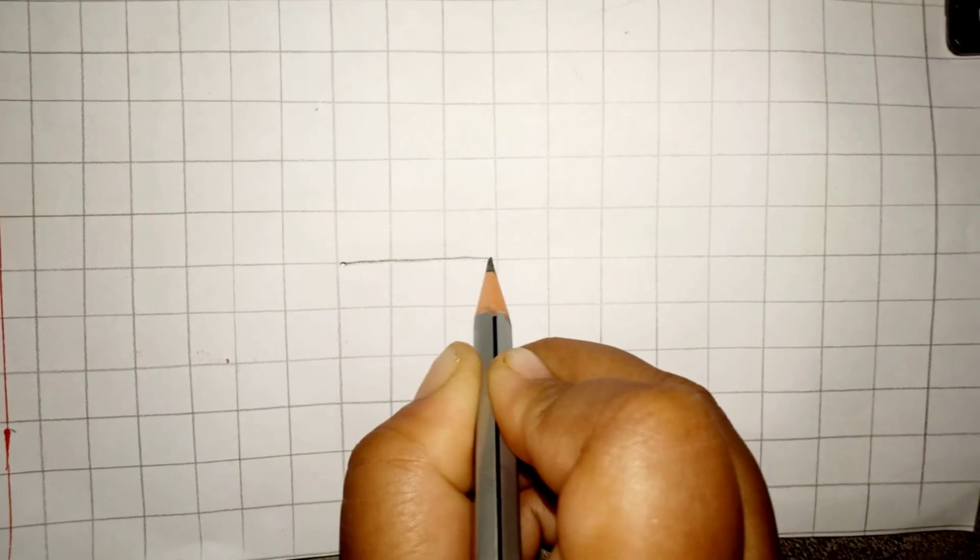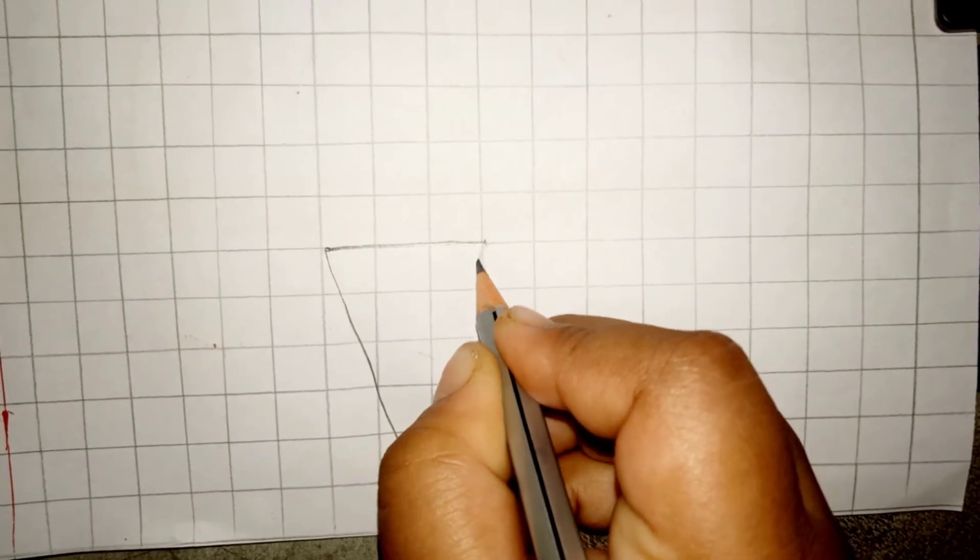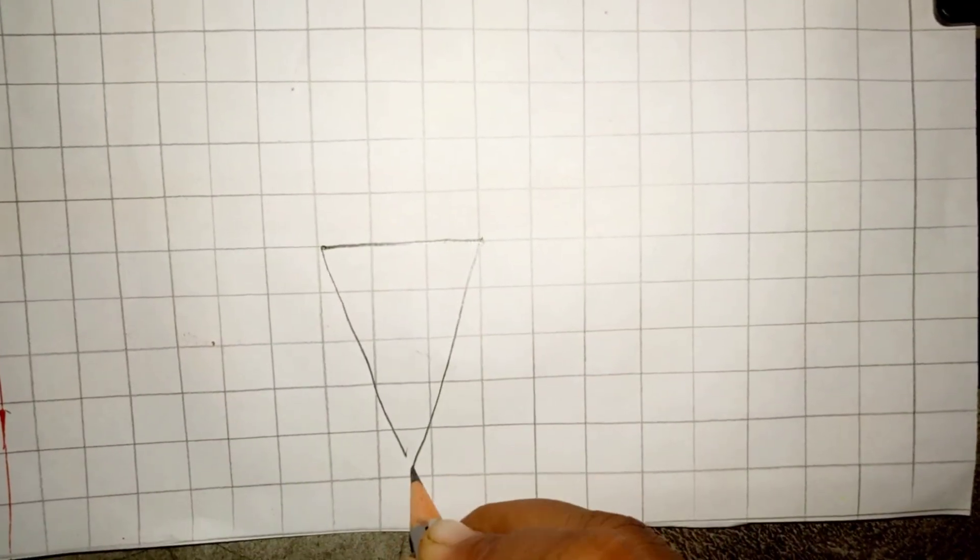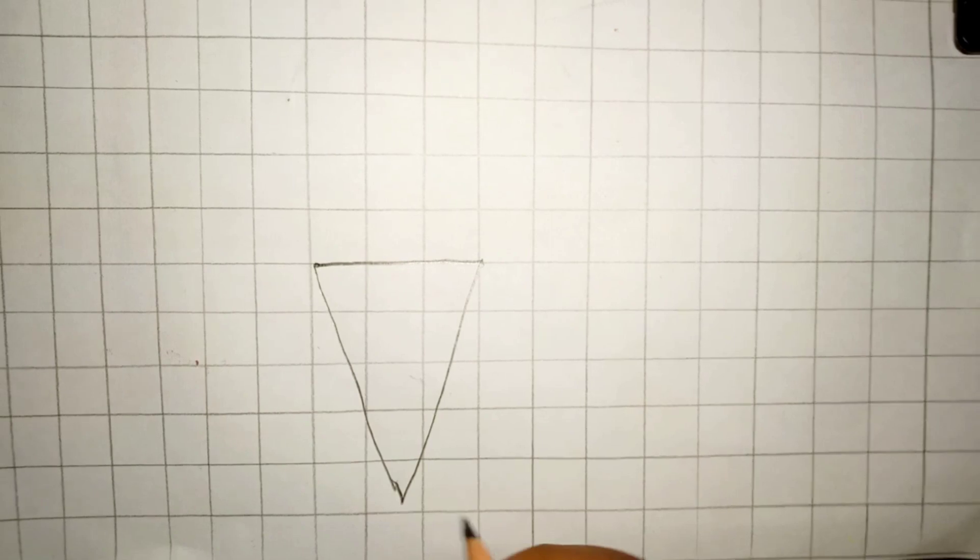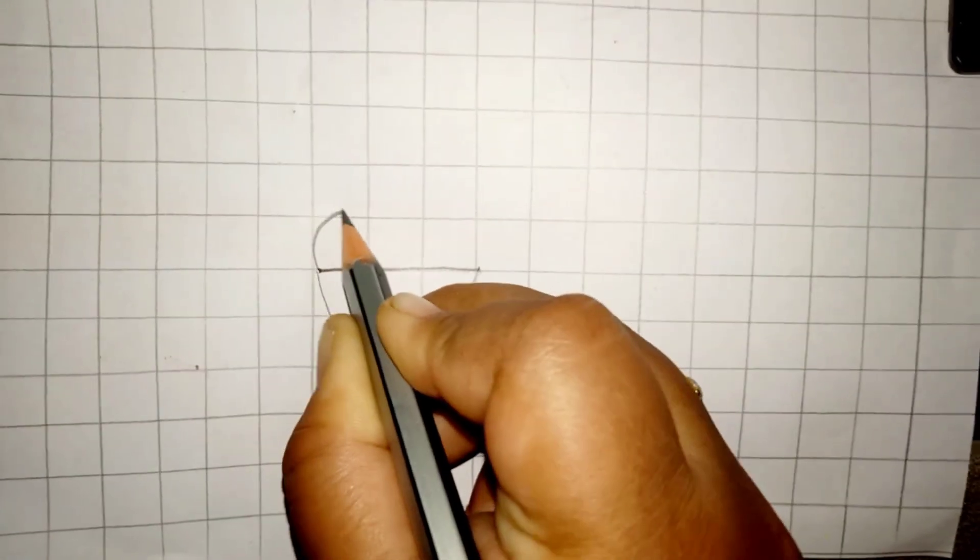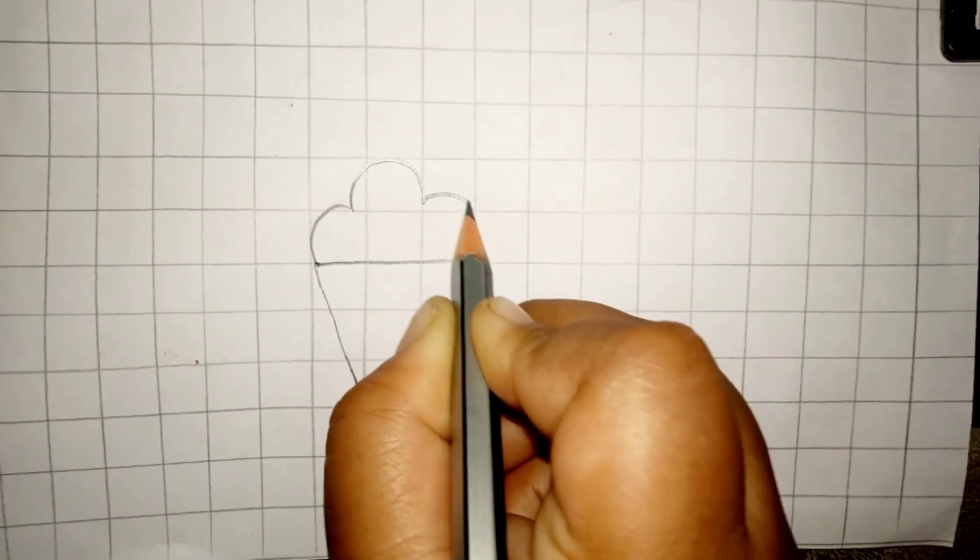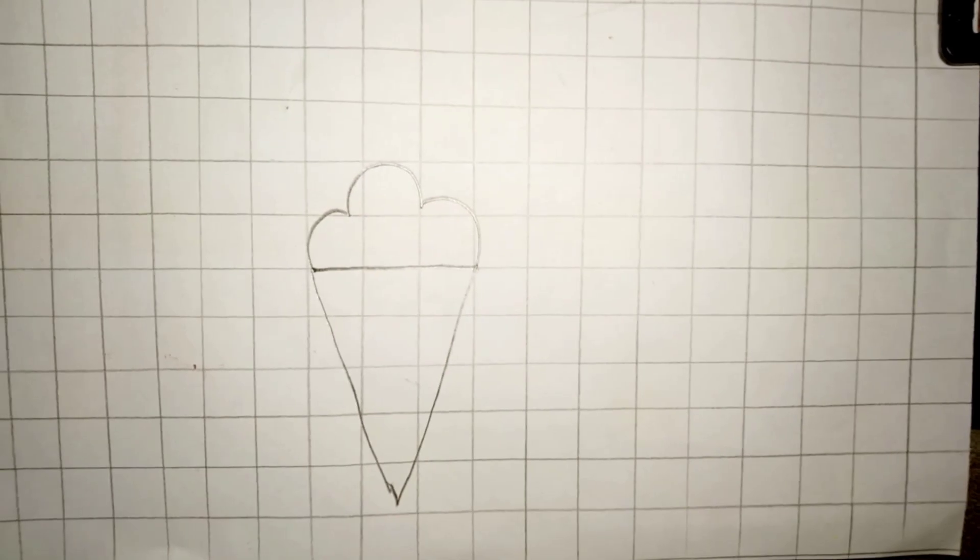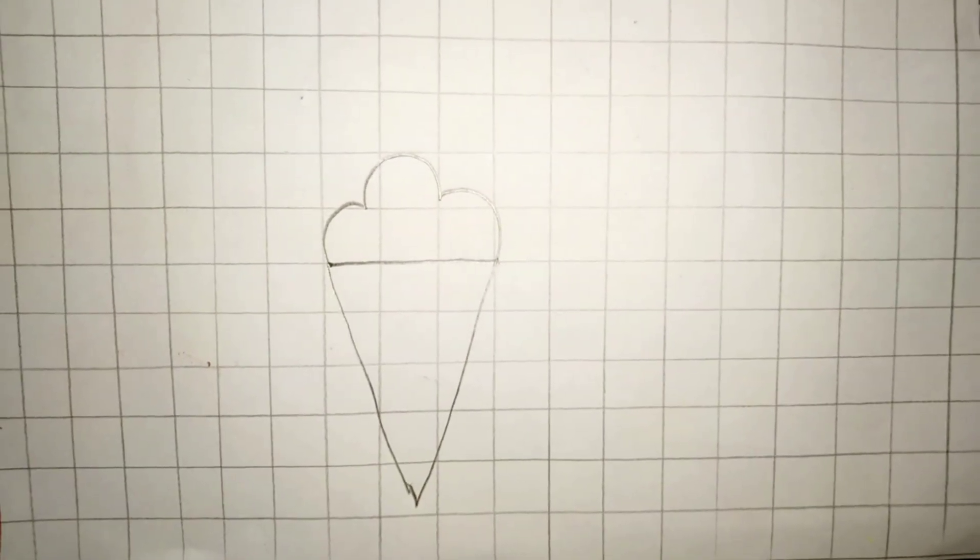Now, again, we can draw here a triangle like this. Wow, it's an ice cream.